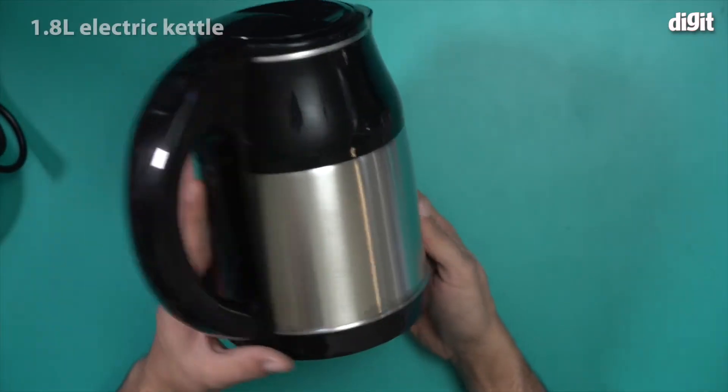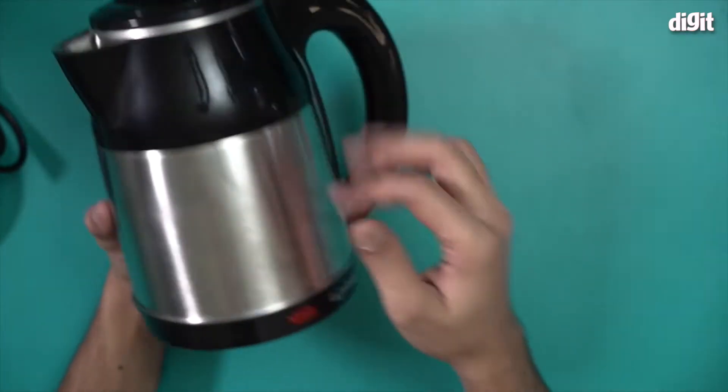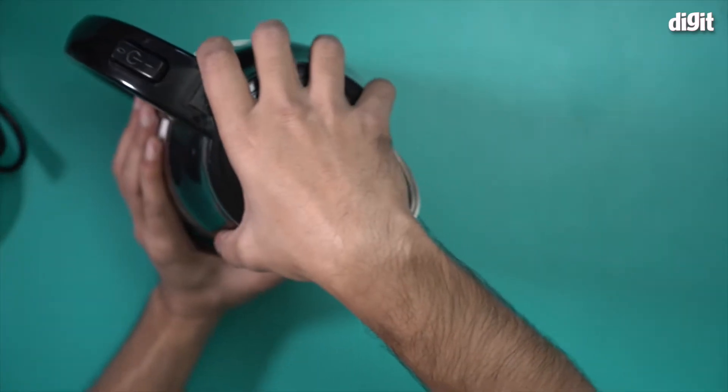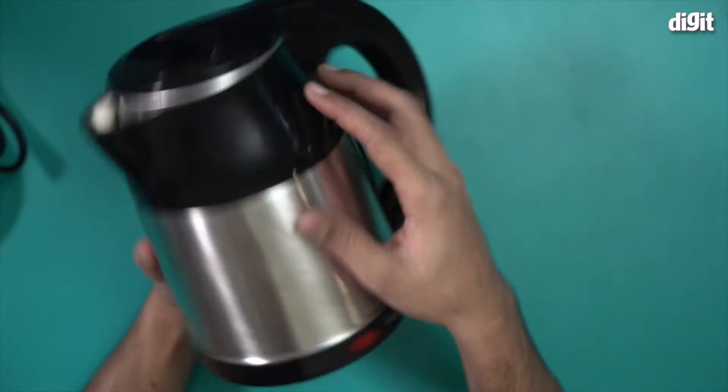There you go, this is the 1.8 liter electric kettle from Lifelong. This has two components: a stainless steel metallic component and a plastic component on top. The plastic component is made out of ABS plastic and has a piano black finish on it.